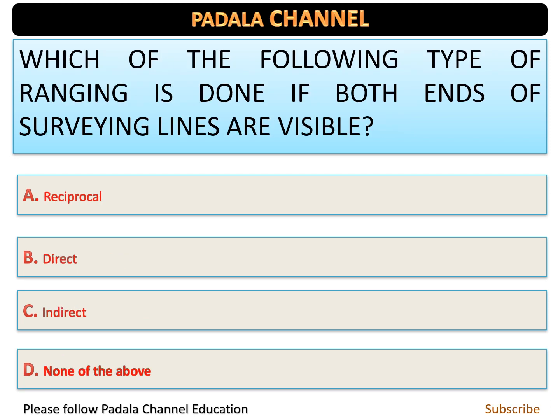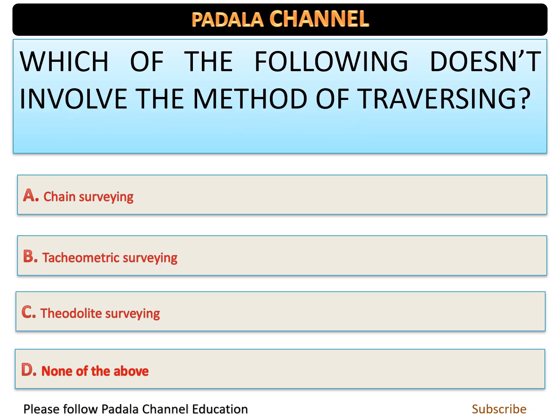Which of the following type of ranging is done if both ends of a survey line are visible to each other? This is a direct question. Option B is the right answer — direct ranging.